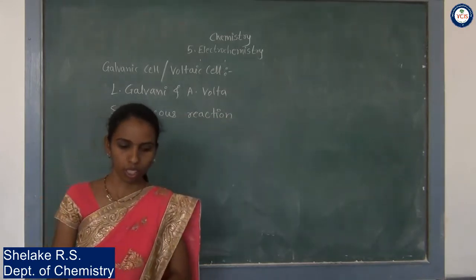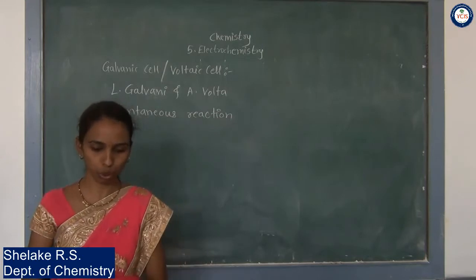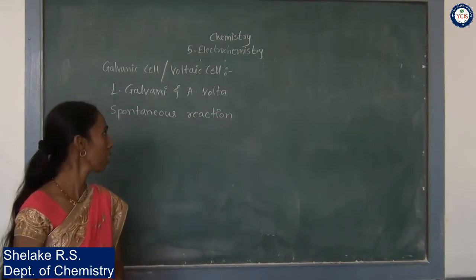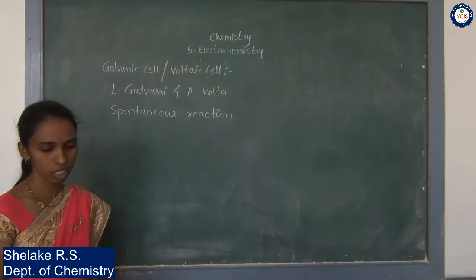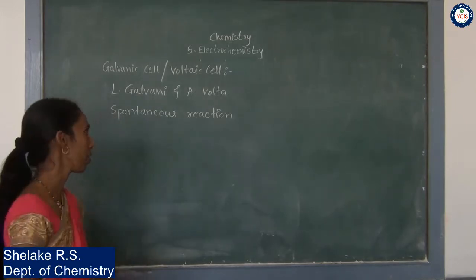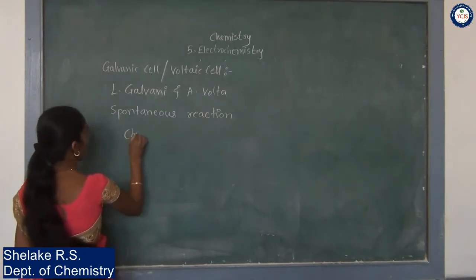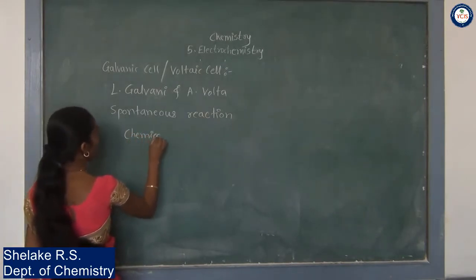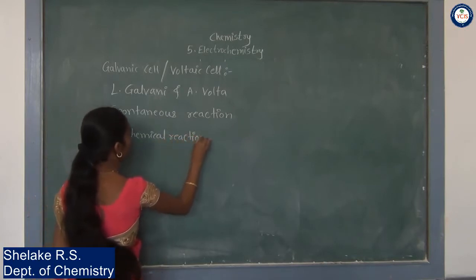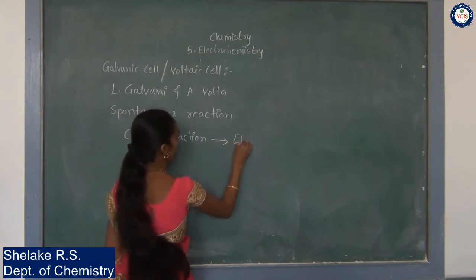In a galvanic cell, electricity is generated through the use of a spontaneous chemical reaction. The electrical energy or electricity is generated, and that is why the spontaneous chemical reaction is converted into electrical energy.